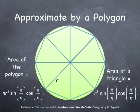Now, there are n such triangles. Therefore, the area of the polygon is n times r-squared times sine pi over n times cosine pi over n. And then we let n go to infinity and at the limit we get the area of the disk.